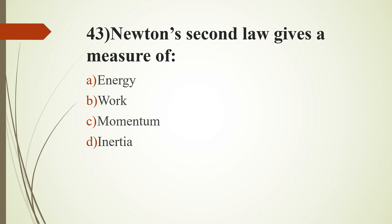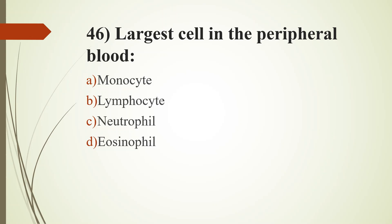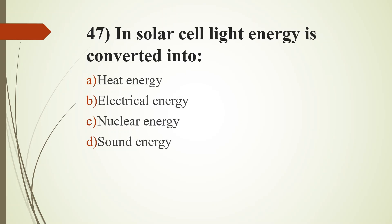43rd question. Newton's second law gives a measure of: option A, energy; option B, work; option C, momentum; option D, inertia. Answer is option D, inertia. 45th question. Light year is a unit of: option A, distance; option B, time; option C, mass; option D, intensity of light. Answer is option A, distance. 46th question. Largest cell in the peripheral blood: option A, monocyte; option B, lymphocyte; option C, neutrophil; option D, eosinophil. Answer is option A, monocyte.